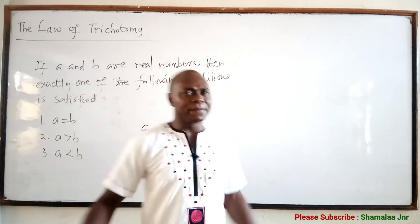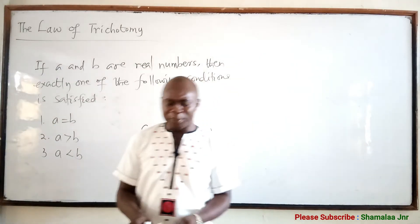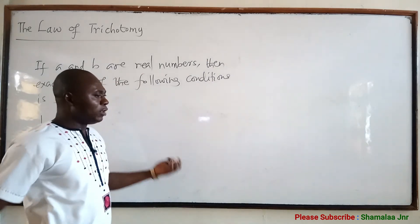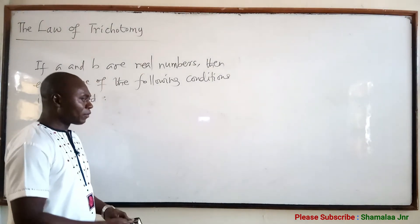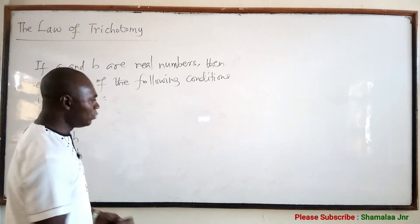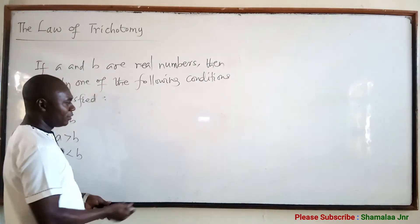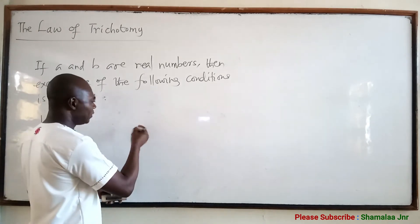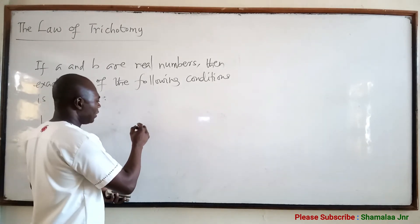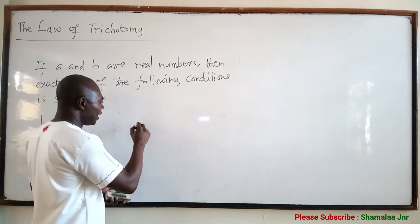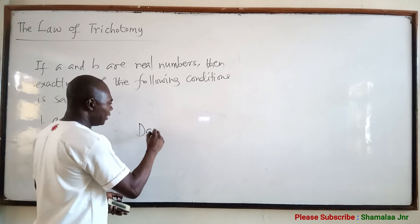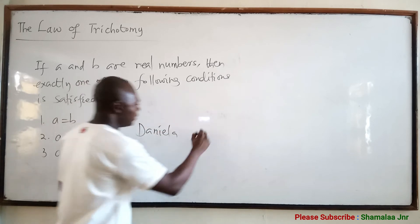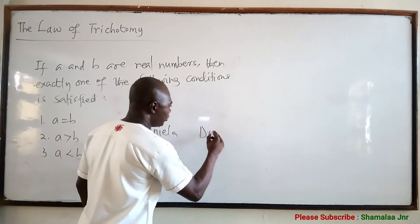So how would you explain this to a lay person? To a lay person, you can say that if you have two girls — let's say the girls are Daniela and Dorothy.